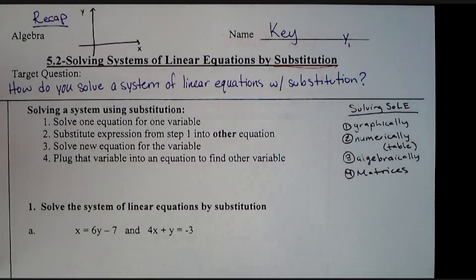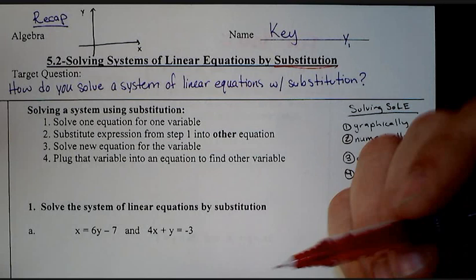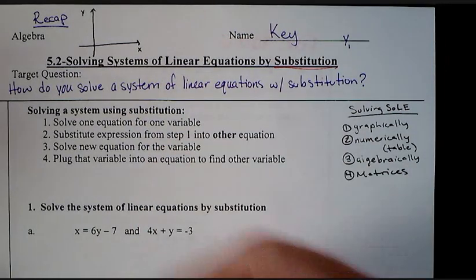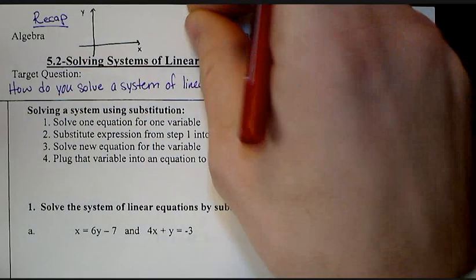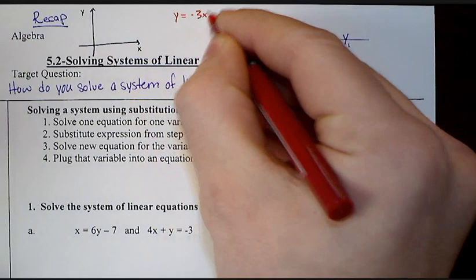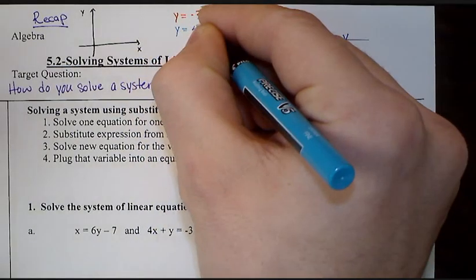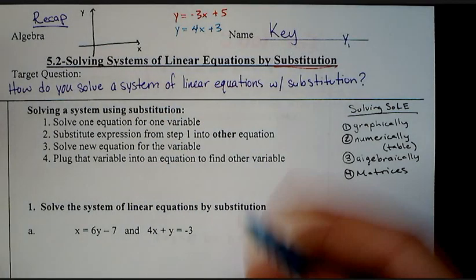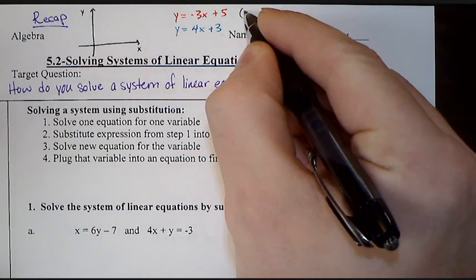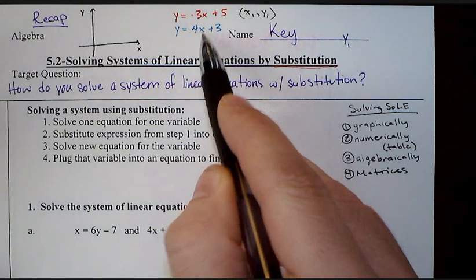Before we get into it, I want to recap what we did yesterday, 5.1, which was our introduction to solving systems of linear equations. If you remember, a system of linear equations is just two or more linear equations. The solution to this system is some value x1 and y1, which makes both of these true at the exact same time.